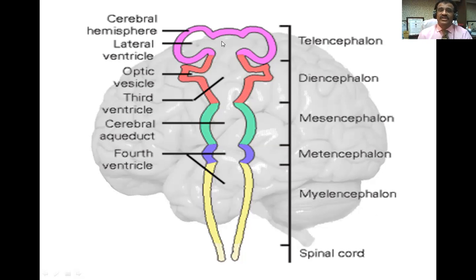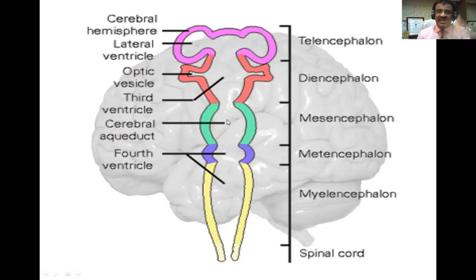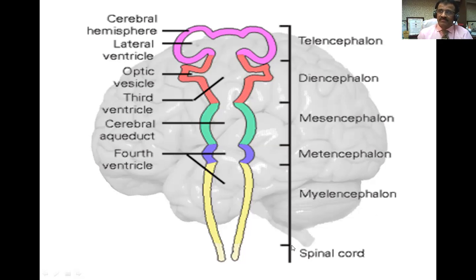You can see there is a ventricular system inside the brain which consists of four ventricles. Two lateral ventricles are present in the cerebral hemispheres and the third ventricle is present in the diencephalon, so all three ventricles are in the forebrain. In the midbrain there is no ventricle but there is a cerebral aqueduct. The fourth ventricle is located in the hindbrain, between the pons in front and the cerebellum behind. After the medulla oblongata there is the spinal cord.